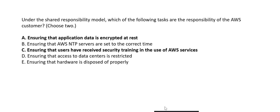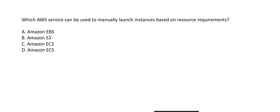Seventh question: which AWS service can be used to manually launch instances based on resource requirements? The answer is EC2. EBS is Elastic Block Store — storage, not instance launching. Amazon S3 is object storage, not for launching instances. ECS is the container service, not for general instance launching. EC2 is correct.